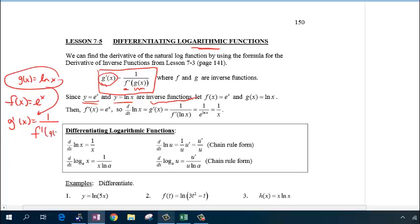That means I need to figure out f prime, and of course f prime is just the e to the x function, but evaluate it at g of x, so that's ln x. And that's how you get 1 over x, because e and log are inverse functions.